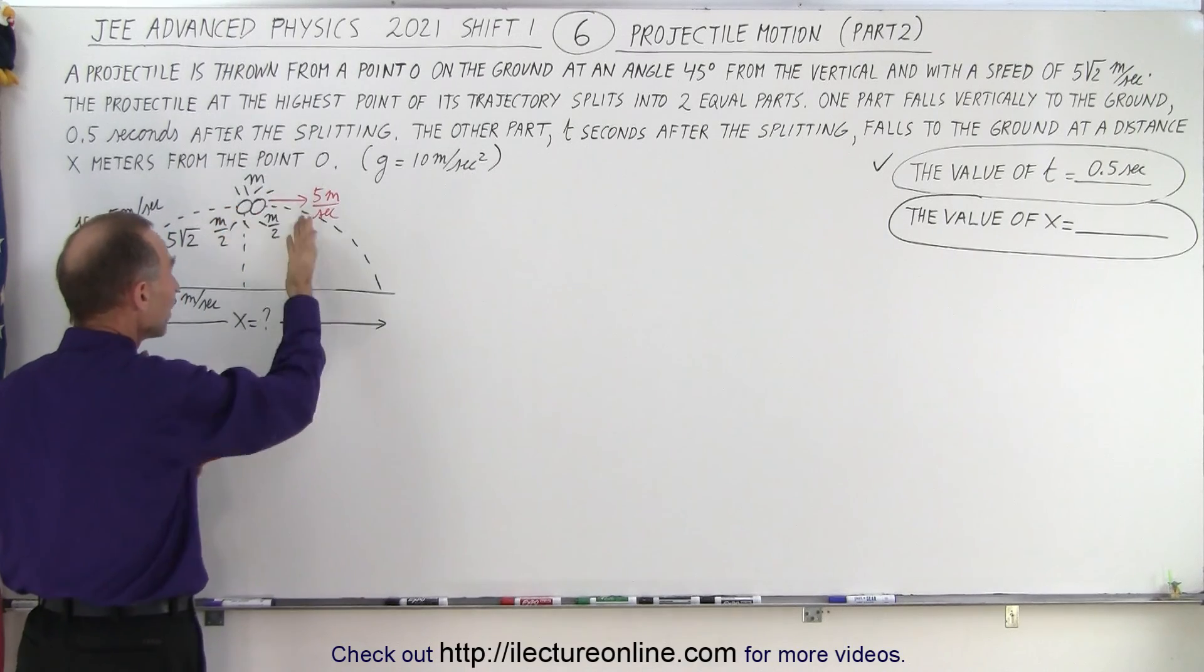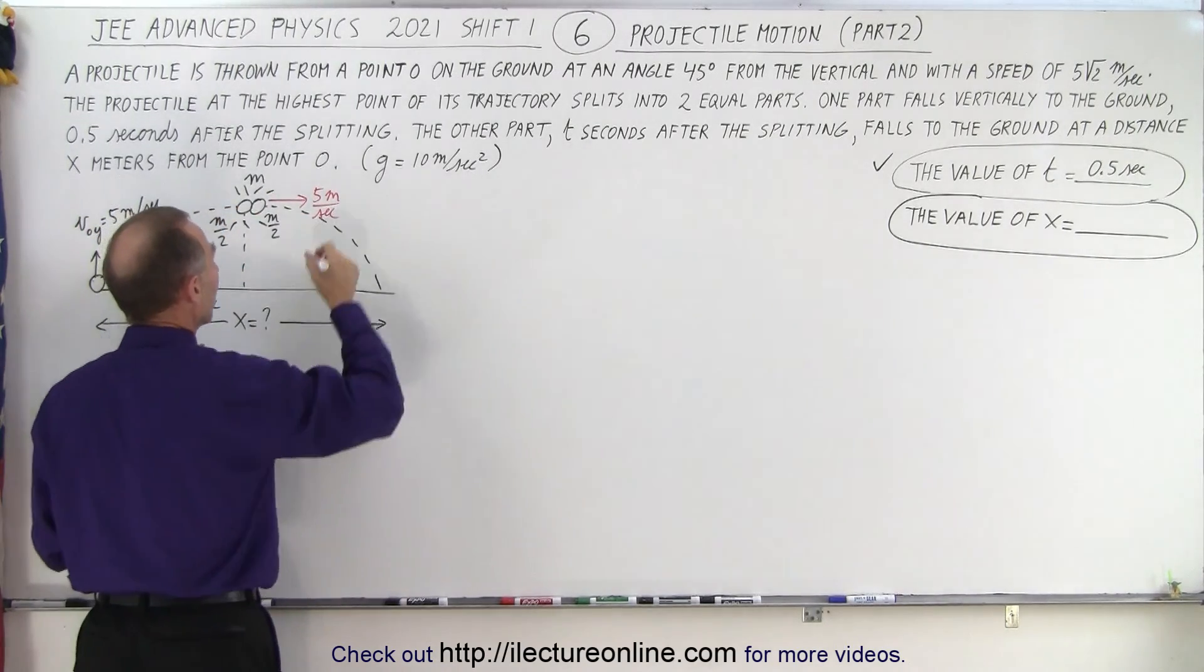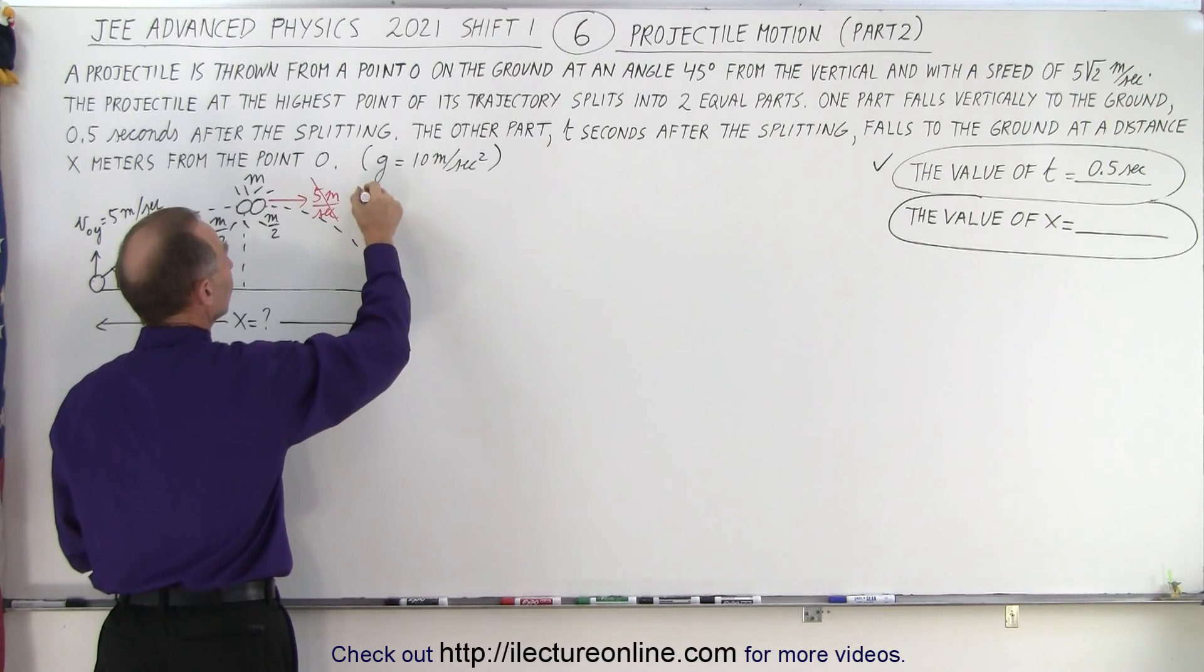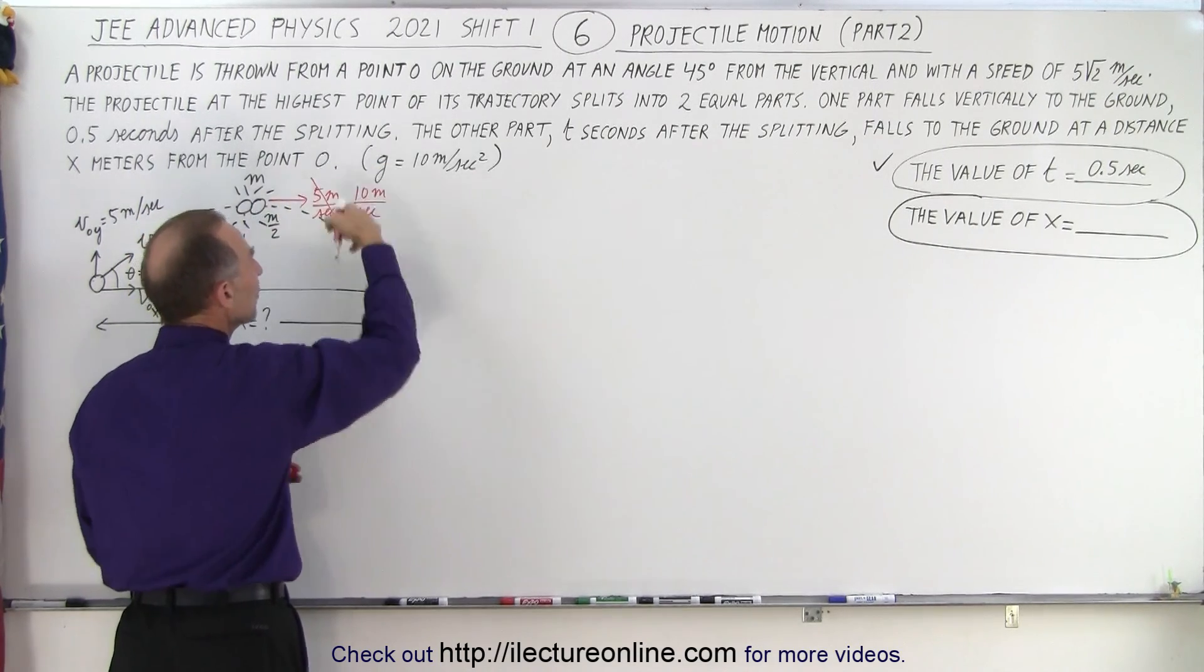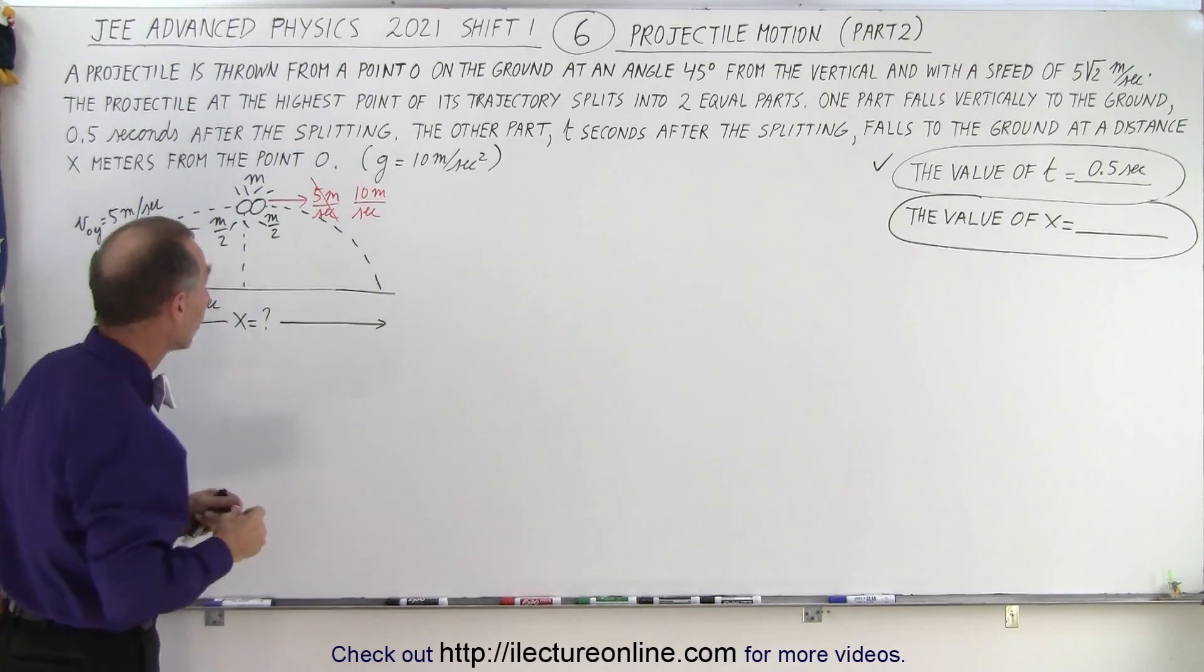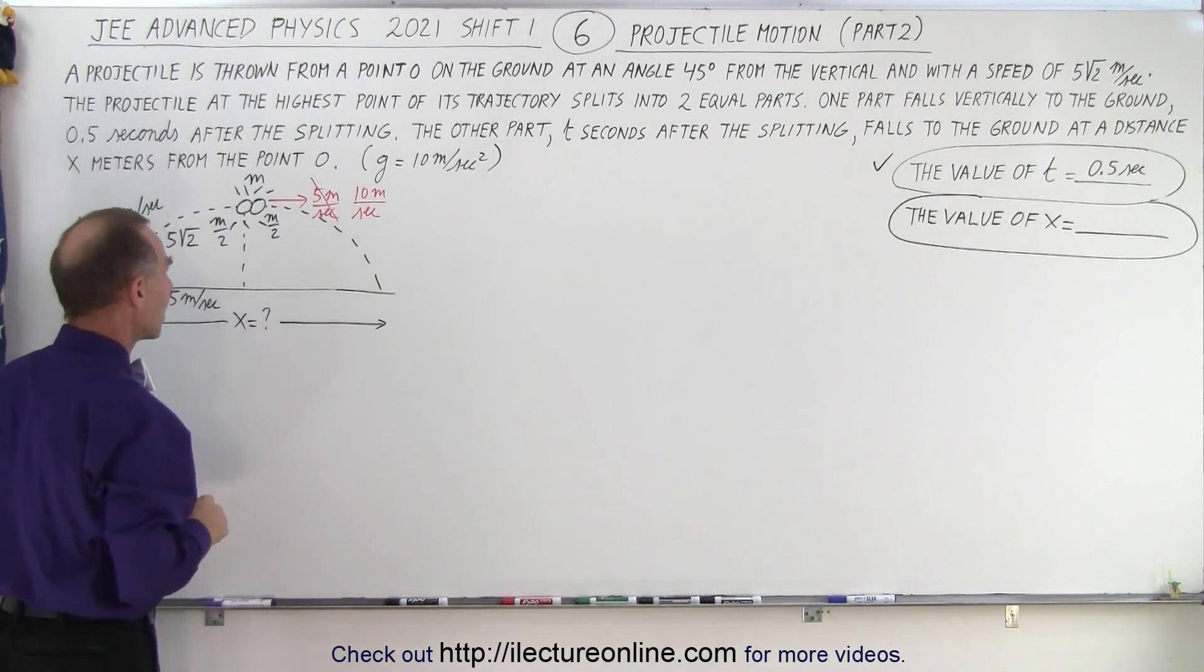It has half the mass, same momentum, so therefore it now has twice the speed. So the piece that is continuing straight is now going to be moving at 10 meters per second while the other piece starts falling straight down.